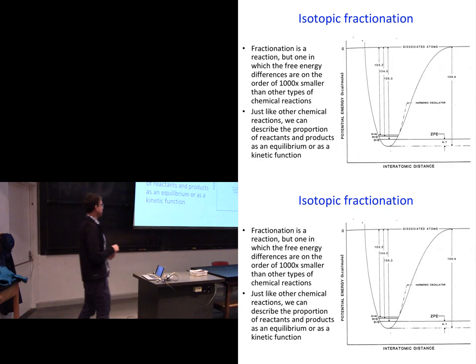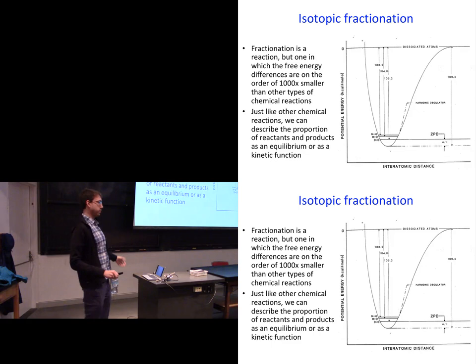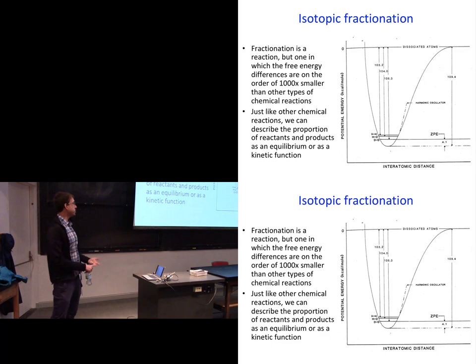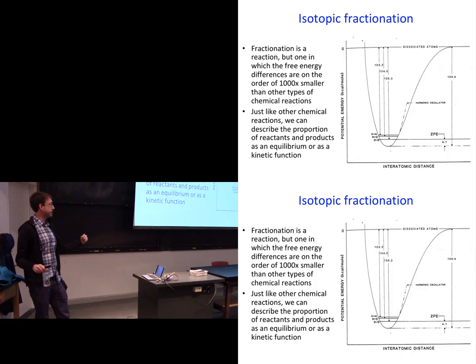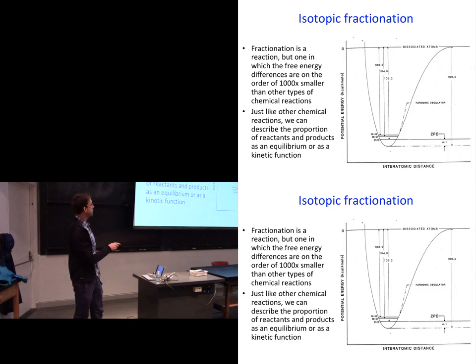So we're going to have to look at the isotope record, and in particular oxygen. You would naively expect that since isotopes have the same number of protons and electrons, they would react chemically the same. And by and large that's true — chemical behavior is set by protons and electrons. But there are very small differences in bond strength that depend upon mass.